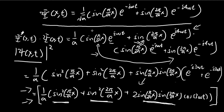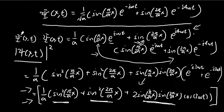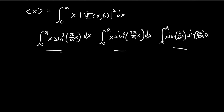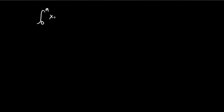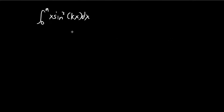The first integral corresponds to the first term, the second integral corresponds to the second, and the third integral corresponds to the third. Let's try to solve the first two first because they look kind of similar — it's x times the sine squared term. So let's solve for the general case with kx, which is going to apply for both. k is going to be π/a for the first, and 2π/a for the second. We're going to use integration by parts, so we need to find the integral of sin²(kx) first.